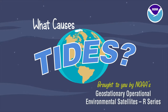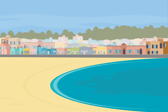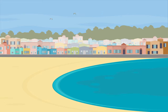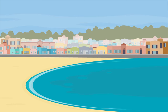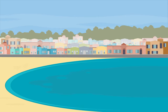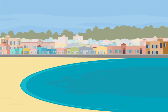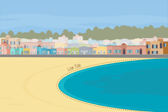What causes tides? If you've ever spent a day at the beach, you've probably noticed that the ocean water is constantly moving. Waves cause the ocean to move all day long, and tides cause the ocean to rise and fall twice each day. The water's highest point is called high tide, and the water's lowest point is called low tide.